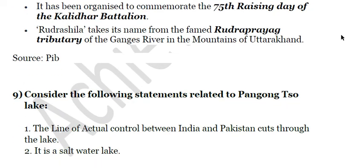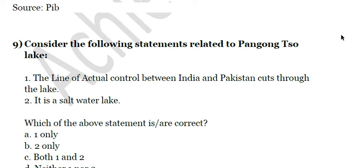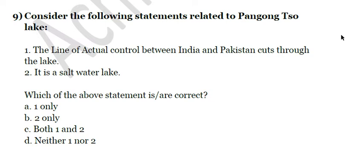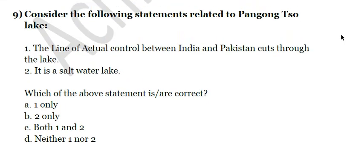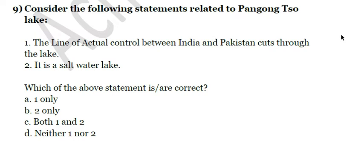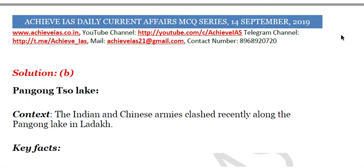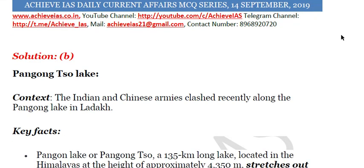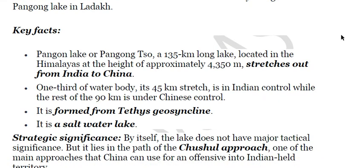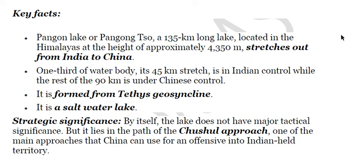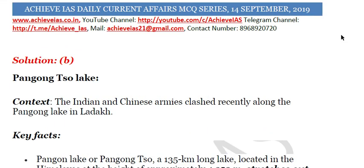The ninth question: consider the following statements related to Pangong Lake. First, the Line of Actual Control between India and Pakistan cuts through the lake. Second, it is a saltwater lake. The first statement is clearly wrong because the Line of Actual Control is not between India and Pakistan — it is between India and China. The second statement is correct, so the answer is B, second only. Indian and Chinese armies recently clashed along Pangong Lake in Ladakh. It is a 135-kilometer long lake located in the Himalayas at approximately 4,350 meters, stretching from India to China. It is a saltwater lake and has strategic significance as it lies at the path of the Chushul approach, one of the main approaches that China can use for an offensive into Indian territory.